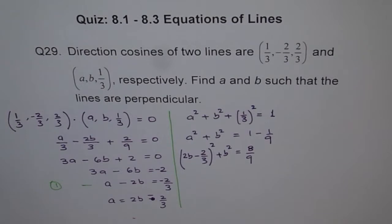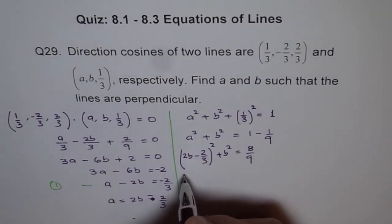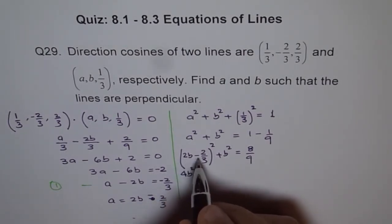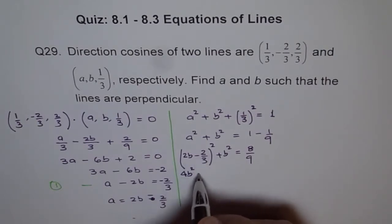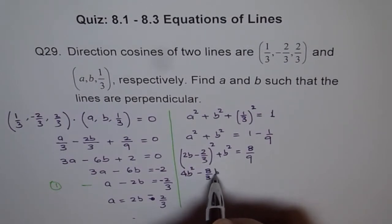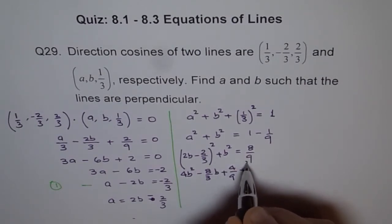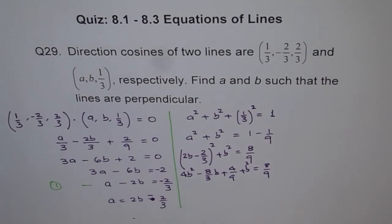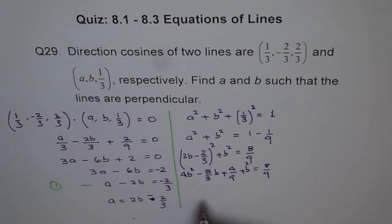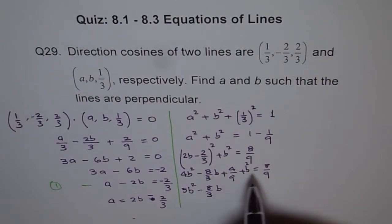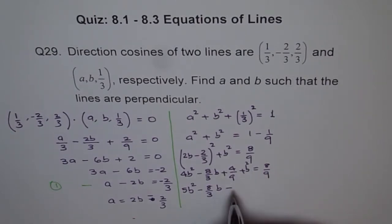Expanding: 4B² - 8B/3 + 4/9 + B² = 8/9. Combining terms: 5B² - 8B/3 + 4/9 - 8/9 = 0, which gives 5B² - 8B/3 - 4/9 = 0.